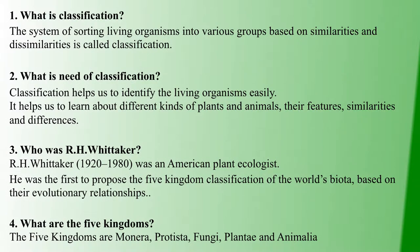First question: what is classification? Classification is done because living organisms have various groups. Based on similarities and dissimilarities, we classify them for easy identification. Any organism with similar characteristics is grouped together. That's why we do classification — to easily identify different types of plants and animals based on their features.